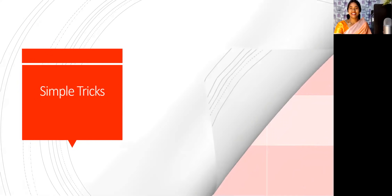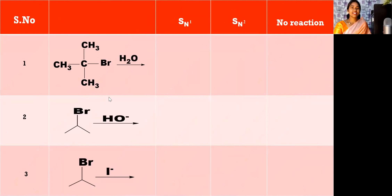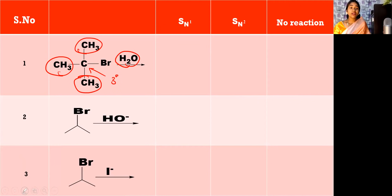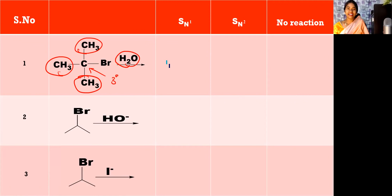Let's start the questions. See the first question here. What you need to do first is see the nucleophile, and see what kind of alkyl halide it is. This carbon is surrounded by three other carbons — one, two, three — so it is a tertiary. Tertiary means SN1. So the reaction is SN1.